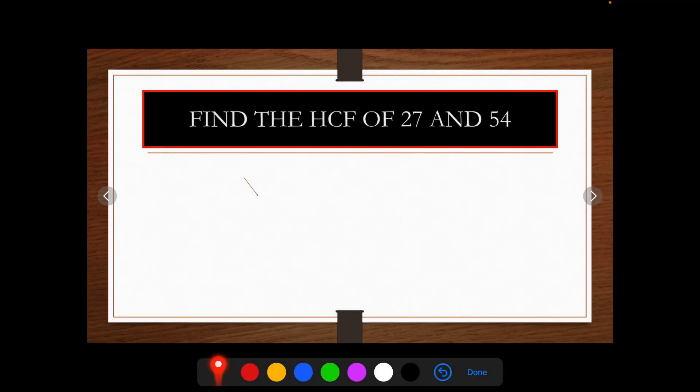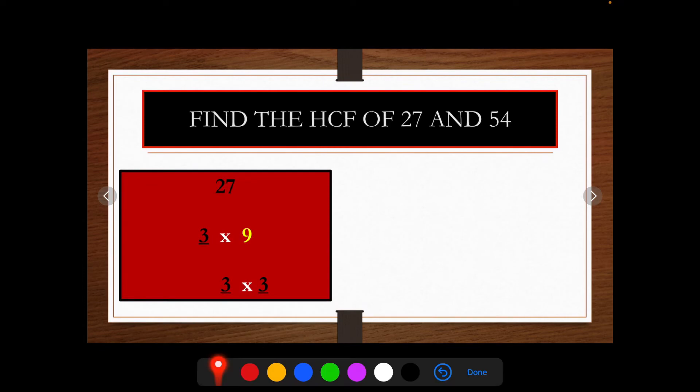Let us focus on the example. Find the HCF of 27 and 54. First, write the numbers at the top to be factorized. Then, choose any multiplication fact or factor pair for both the numbers. For example, 27 can be factorized as 3 times 9 equals 27.